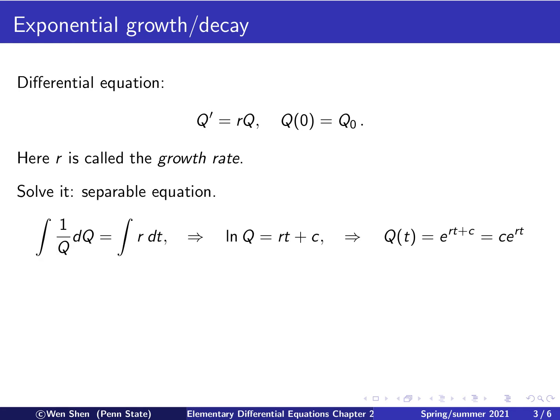This can be solved for any constant r we put there because we see that this is a separable equation. We can move the Q to the left-hand side and have 1 over Q, and then move the dt to the right-hand side and have r dt, and then we integrate. The integral of this gives me ln of Q, and the integral here gives me rt plus a constant.